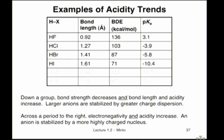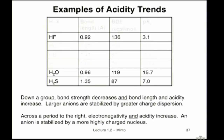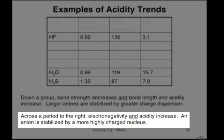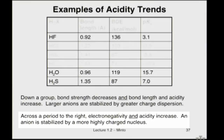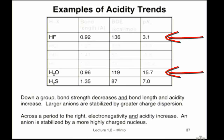As you go across a period — horizontally on the periodic table — different trends apply. The most important trend as you move towards the right-hand side is that as electronegativity increases moving from left to right, acidity also increases. For a comparison like water versus HF: hydrogen is attached to oxygen in one case and to fluorine in the other. They're on the same period, and fluorine is more electronegative, so the proton attached to fluorine is more acidic. HF has a pKa of 3.1, while water is a much, much weaker acid.